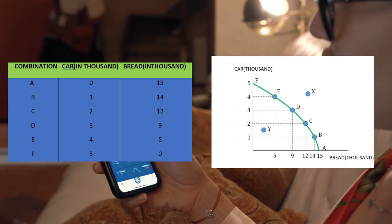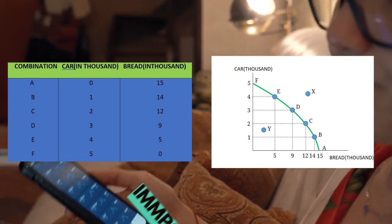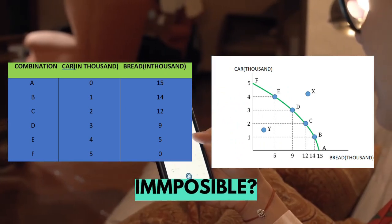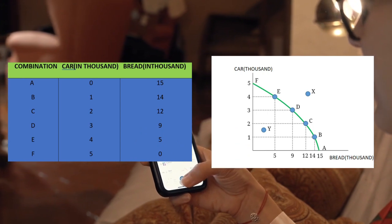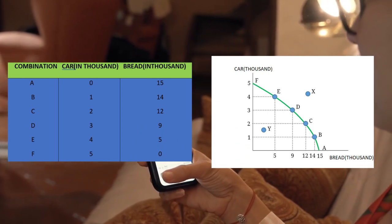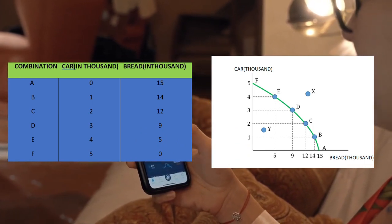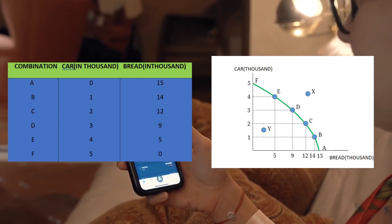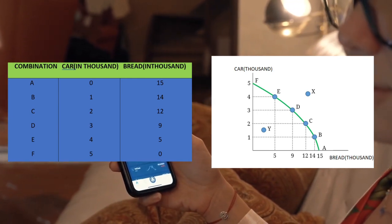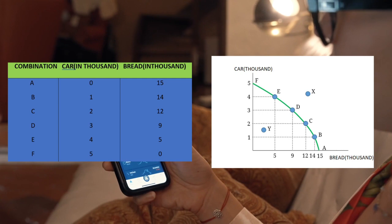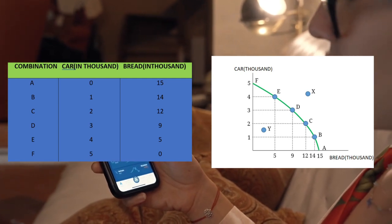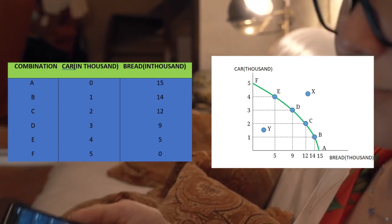Point X is a combination that is impossible to produce because the economy does not have the resources to reach that level of production. In other words, the economy can produce at any point on or inside the production possibility curve, but not at a point outside the PPC curve.